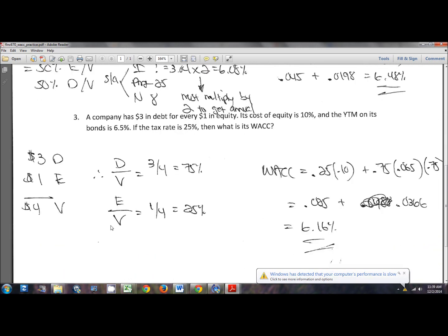So number three, this information is presented to you in a slightly different manner. This company has $3 in debt for every $1 in equity. Its cost of equity is 10%. The yield to maturity on its debt is 6.5%. Tax rate is 25%. What is its WACC? So the cost of equity and the cost of debt are given to you.